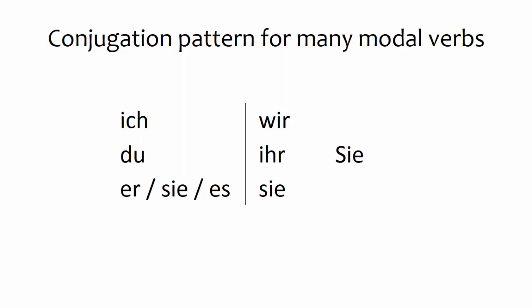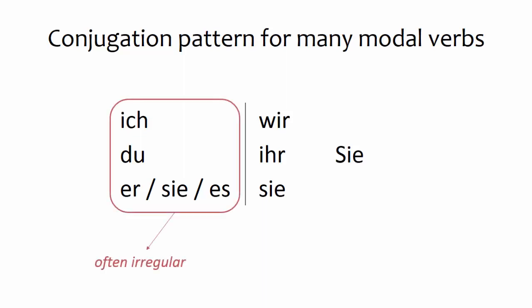Finally, let's look at the conjugation of modal verbs. Most modal verbs have highly irregular conjugations that must be memorized. Conjugation charts are easy to find with a quick internet search, so we won't go over that here. But there are two tips worth noting. Tip number one: typically, the irregularities in conjugation show up in the singular forms. That means the ich, du, and er/sie/es forms can show a change in the vowel and a change in endings. This is not true of the plural forms, which are conjugated like all other verbs.